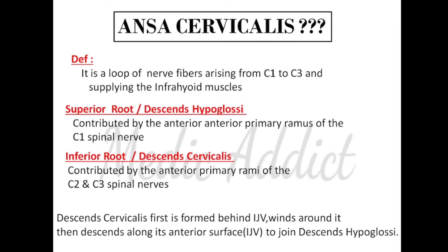It has two roots. The superior root is called the descens hypoglossi. The reason for calling it descens hypoglossi is that C1, the superior part, is in close proximity to cranial nerve number 12. So the superior root is contributed by the anterior primary rami of the C1 spinal nerve. The inferior root, that is the descens cervicalis, is contributed by the anterior primary rami of C2 and C3 spinal nerves.